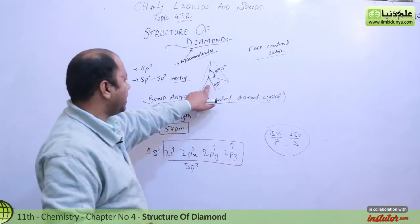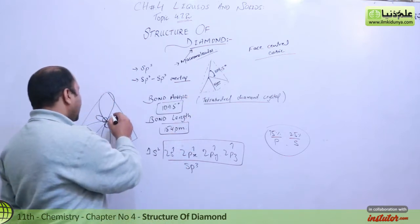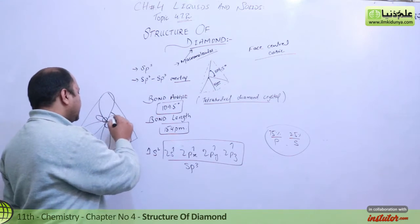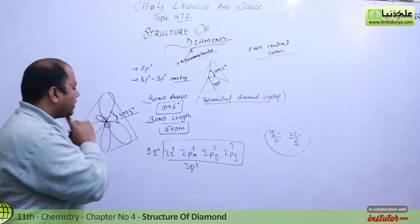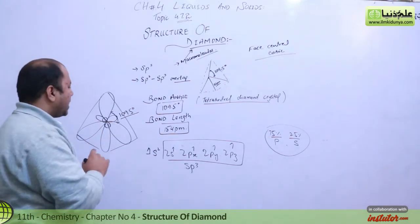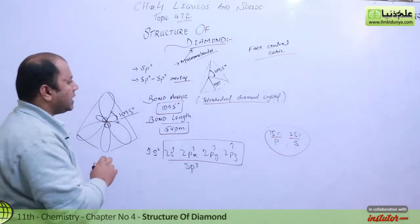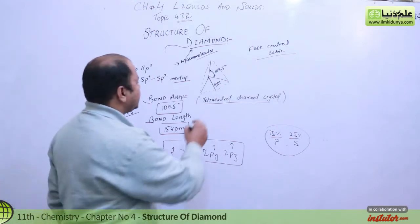The structure I'm talking about here, look at that: one carbon and another carbon. Between them, the angle is 109.5 degrees.